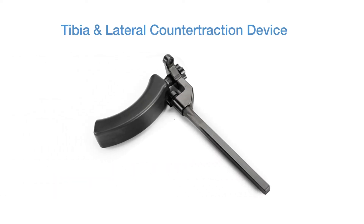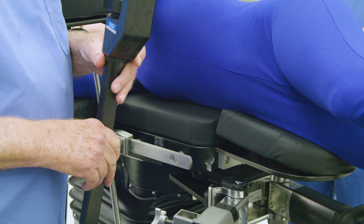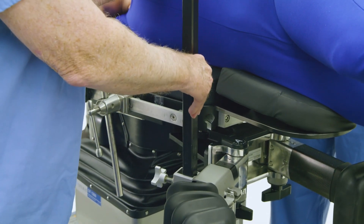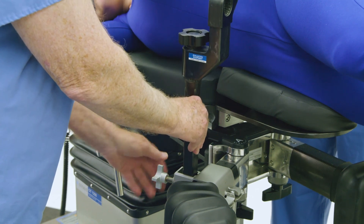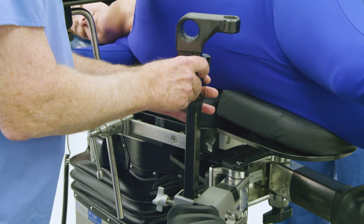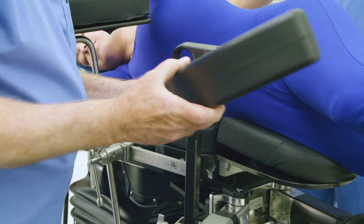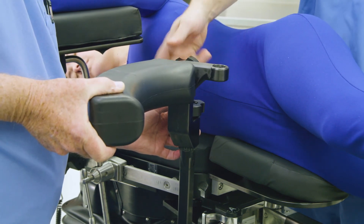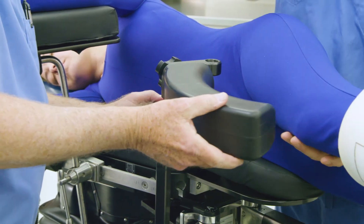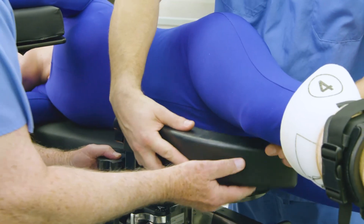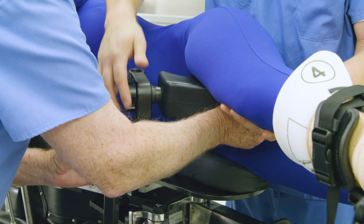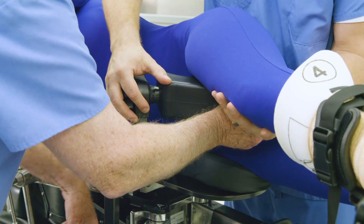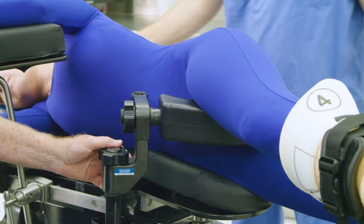In preparation to pull traction when the patient is in a lateral position, the tibia and lateral counter traction device must be installed. Insert the long shaft of the tibia lateral counter traction support into the accessory spar clamp on the non-operative spar. Position the counter traction support to the height of the patient's perineum and tighten. While supporting the patient's affected leg, rotate the tibia lateral counter traction support between the patient's legs. Adjust the height to compensate for patient size and ensure the patient is snug against it, then tighten the knobs to secure.